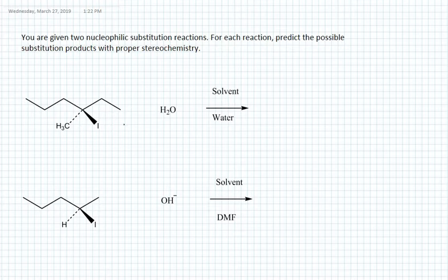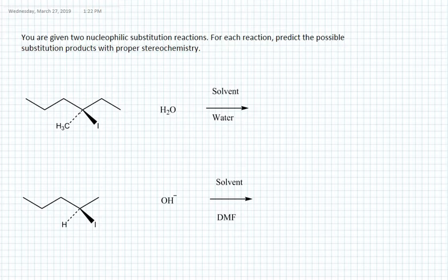Let's look at the first reaction. We have a substrate, a nucleophile, and the solvent is water. We have to identify whether SN1 or SN2 might happen here. Looking at the substrate, it is an alkyl iodide where iodine is the leaving group. The carbon bearing the leaving group has three neighboring carbons, so this is a tertiary halide.